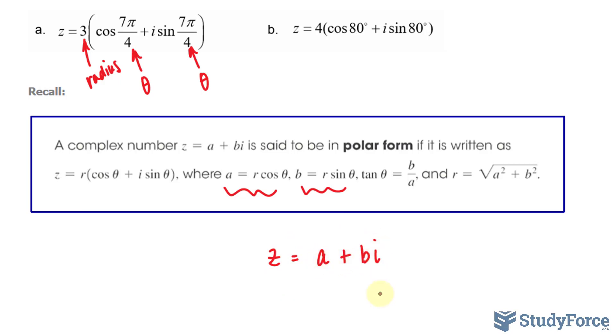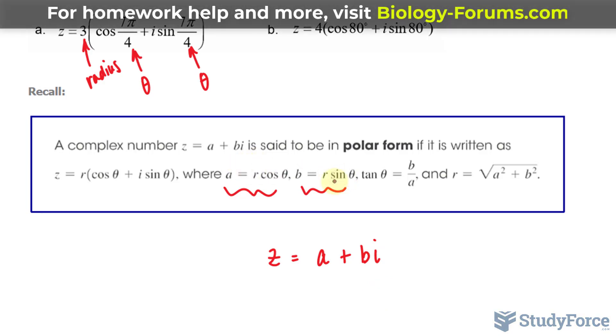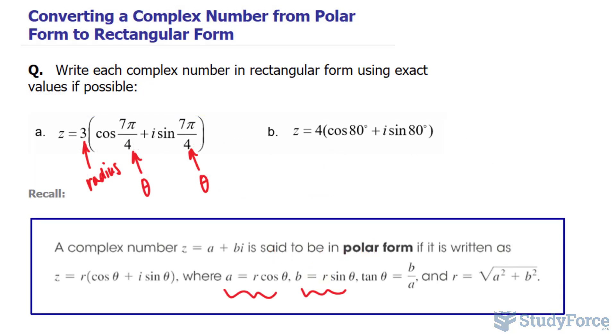So by using these formulas, we can substitute the values we get for A and B into here, and it becomes in rectangular form. Let's go ahead and figure this out. Remember, theta is 7π over 4.